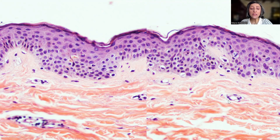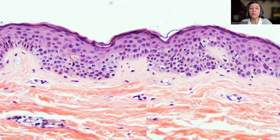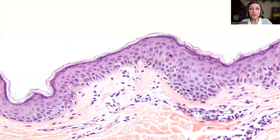The upper dermis is almost unremarkable. The vessels are okay, the collagen is okay. So really, the primary site of injury is within the epidermis.